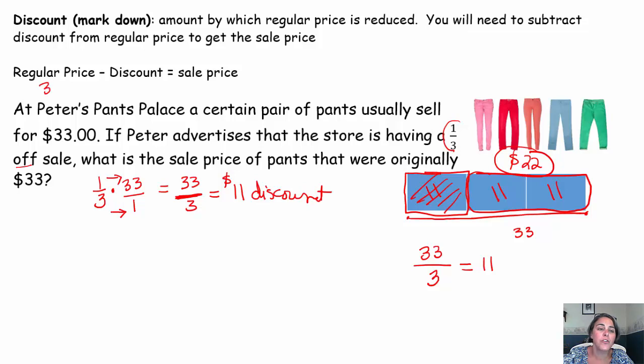So if your regular price was 33 dollars, you would need to subtract off that discount. That's what happens at stores when you have a sale. You have to take off the discount of 11 dollars, 33 minus 11, the sale price is still 22 dollars. More ways to go about that problem, but there's a few.